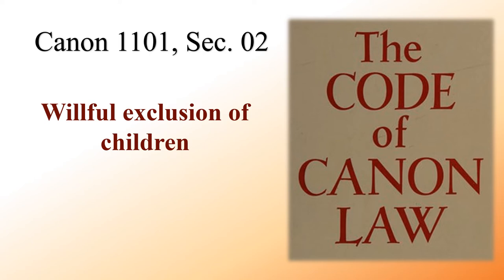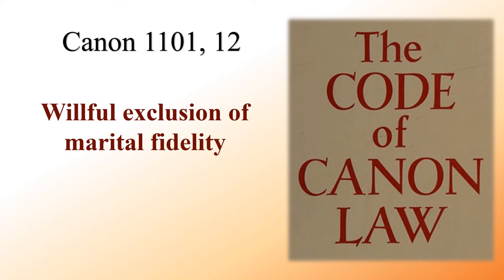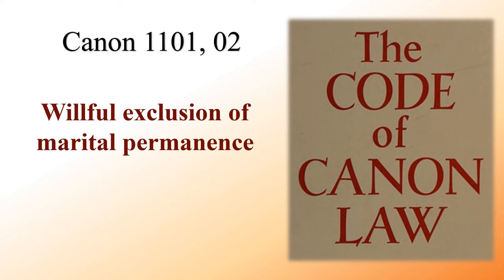Willful exclusion of marital fidelity: You or your spouse married intending either explicitly or implicitly not to remain faithful to your partner. Willful exclusion of marital permanence: You or your spouse married intending either explicitly or implicitly not to create a permanent relationship, retaining an option to divorce.